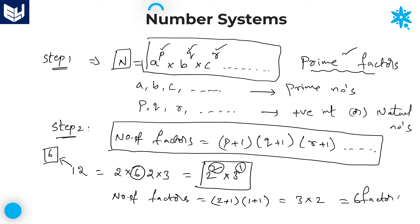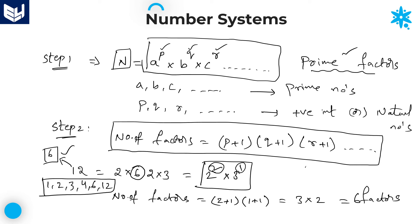Therefore, the number of factors for the number 12 is 6. We got the same result as before — those factors are 1, 2, 3, 4, 6, and 12. But every time it is not possible to write down all the factors and count them. That is a difficult task. To avoid that, we have a shortcut: write the number in terms of prime factors, then the number of factors is (power+1) into (power+1) and so on.